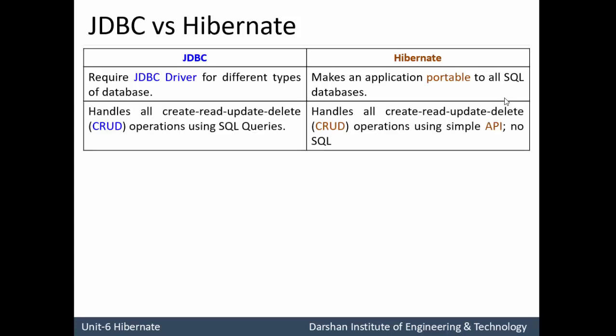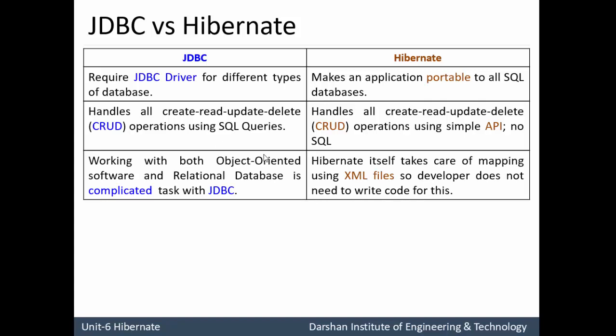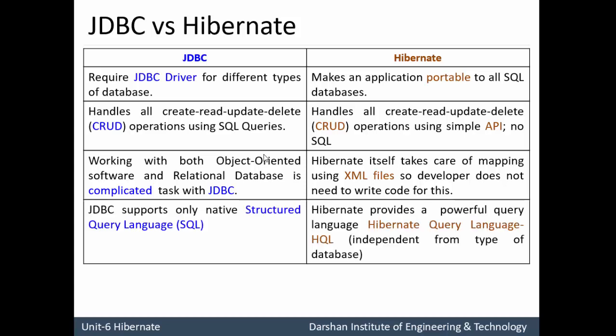Difference five: JDBC handles all CRUD operations — Create, Read, Update, and Delete — using SQL queries. While Hibernate handles all CRUD operations using a simple API with no SQL, instead using HQL, Hibernate Query Language. Difference six: working with both object oriented software and relational databases is a very complicated task with JDBC, because the developer has to code every line that communicates Java with the database. While in Hibernate, it takes care of mapping using the XML file, so the developer does not need to write code for this. Difference seven: JDBC supports only structured query language, while Hibernate provides the powerful Hibernate Query Language, which is independent from the type of database being used.